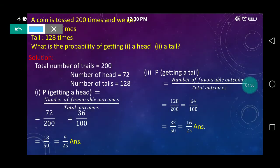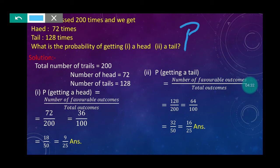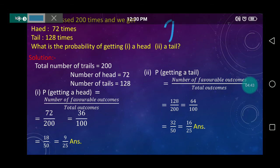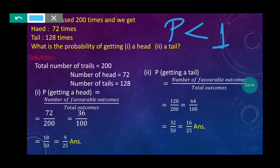This is your answer. Note one thing: probability is always less than 1. Probability will always be less than 1, keep this in mind.